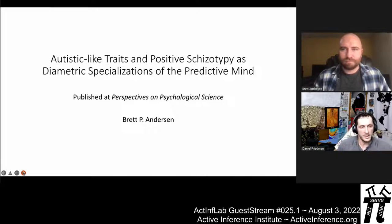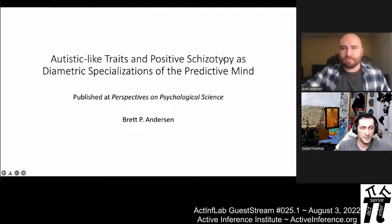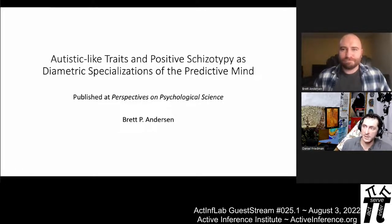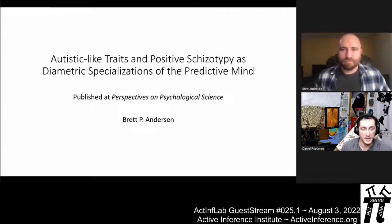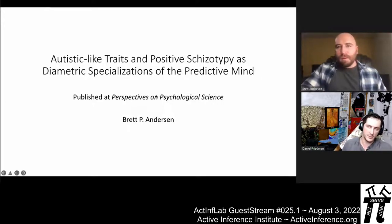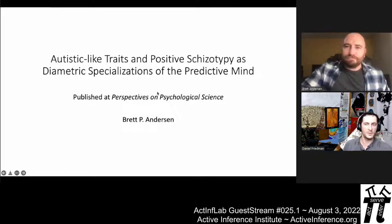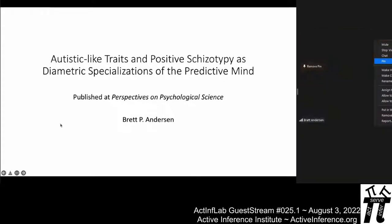Hello everyone, it is August 3rd, 2022, and it's Active Guest Stream number 25.1. We're here with Brett Anderson, and we'll be hearing about autistic-like traits and positive schizotypy as diametric specializations of the predictive mind. There will be first a presentation followed by a discussion segment, so if you're watching live feel free to add any comments or questions. Brett, thank you again for joining.